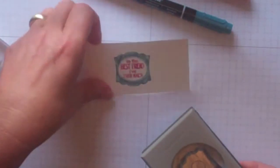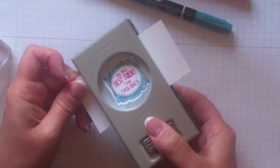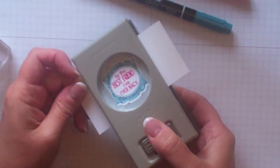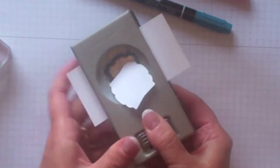Next I'll bring in my punch and you can see that if I turn it over and slide my piece in I can line up the image with the punch and just go ahead and punch that out. Like so.